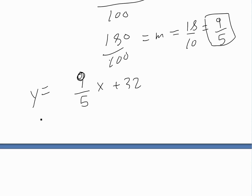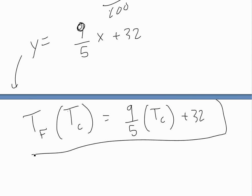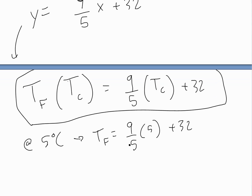Putting in our units, the conversion formula is: T_Fahrenheit = (9/5) × T_Celsius + 32°F. From this we can convert any temperature. For example, at 5 degrees Celsius: T_F = (9/5) × 5 + 32. The 5 cancels with the 5 in the denominator, giving 9 + 32 = 41 degrees Fahrenheit.